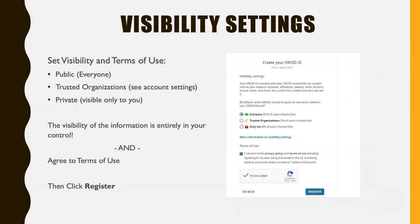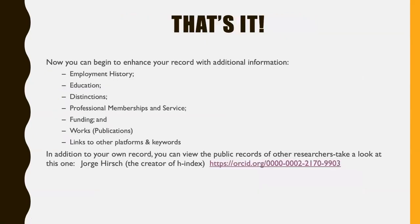Your visibility settings are totally within your control. It can be public, you can share only with trusted organizations, or you can make your record private and visible only to you. Then you need to accept the terms of use and click register. And that's really it. Now you have a basic record you can enhance with information like your employment and educational history, distinctions, memberships, funding, and primarily your publications and works.